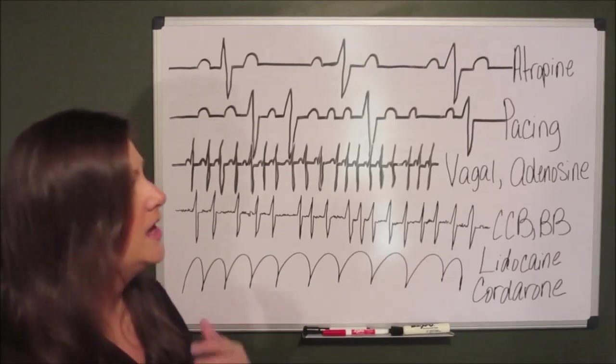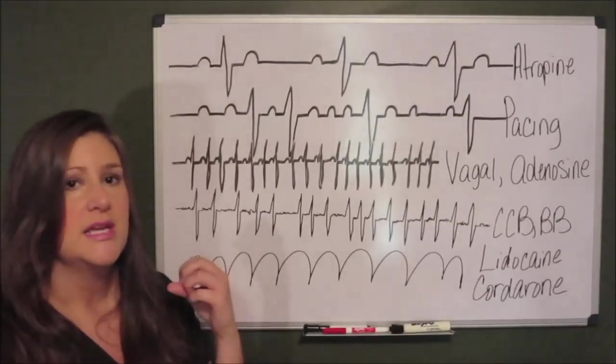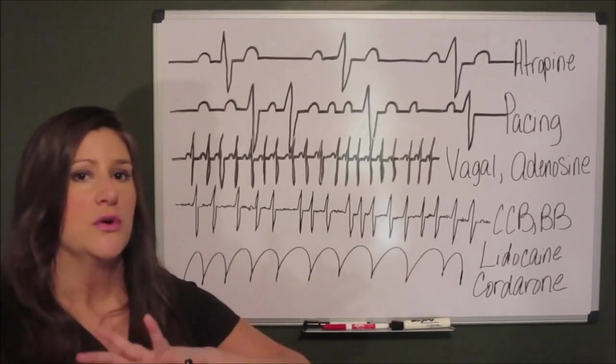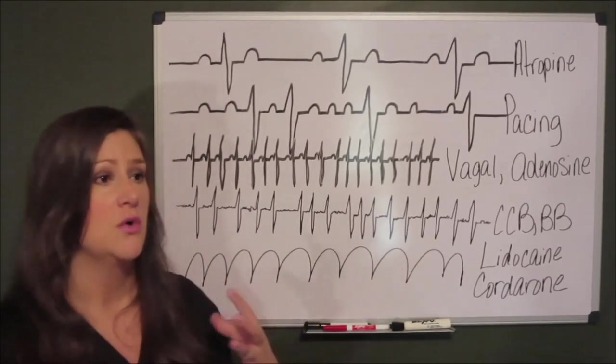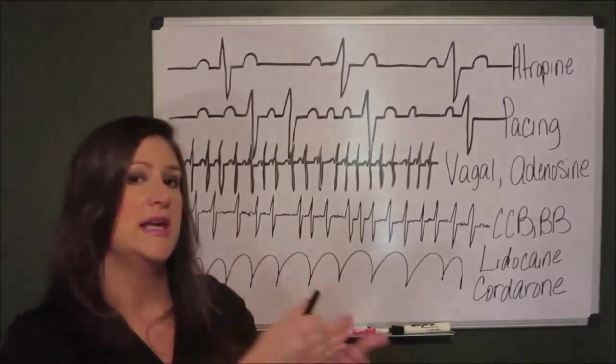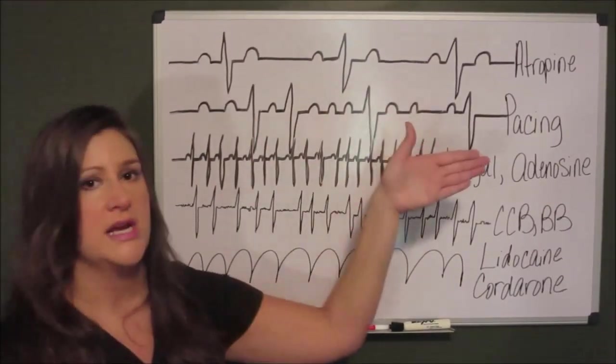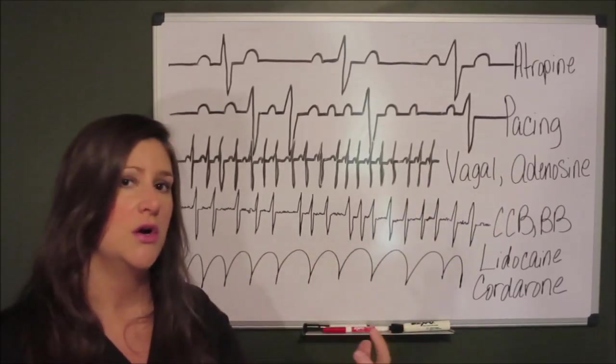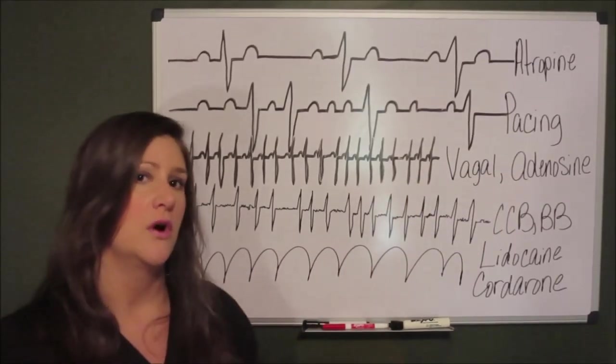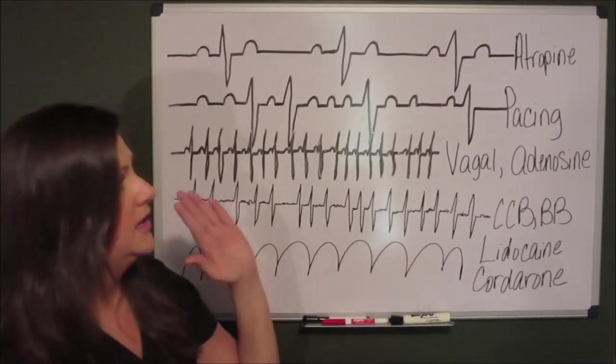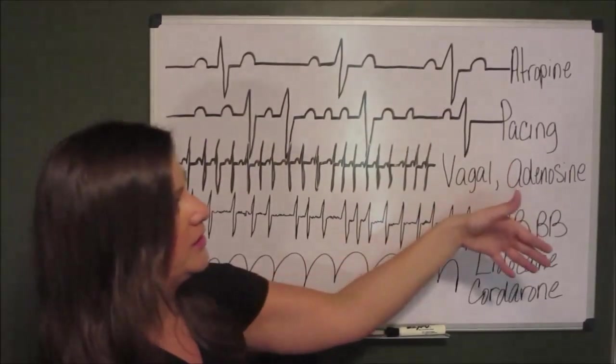Atropine blocks innervation from the vagus nerve. It stops any interaction between the vagus nerve and the SA node. The vagus nerve slows down the heart rate. Atropine blocks that interaction, thus it will speed up your patient's heart rate and hopefully fix any mental status changes or blood pressure drops.